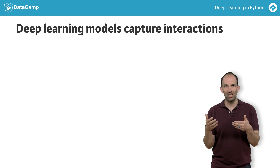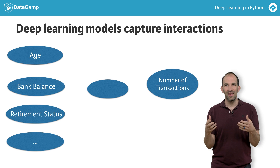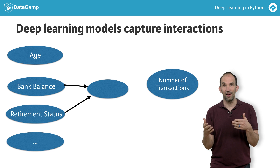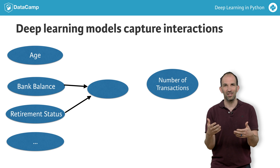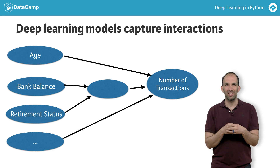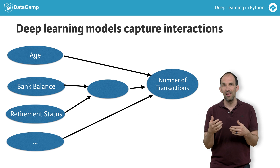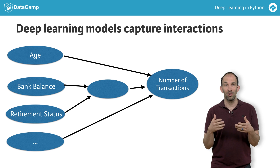As a start to how deep learning models capture interactions and achieve these amazing results, we'll modify the diagram you saw a moment ago. Here, there is an interaction between retirement status and bank balance. Instead of them separately affecting the outcome, we calculate a function of these variables that accounts for their interaction and use that to predict the outcome. Even this graphic oversimplifies reality where most things interact with each other in some way, and real neural network models account for far more interactions. So the diagram for a simple neural network looks like this.